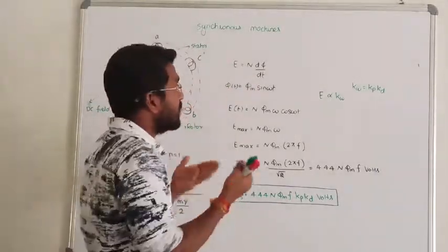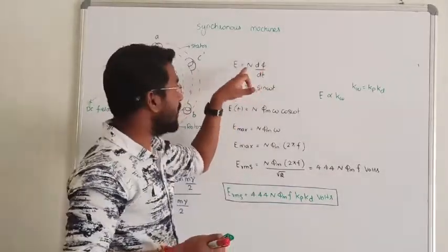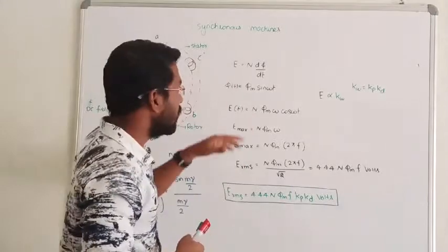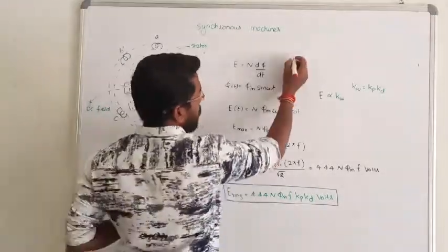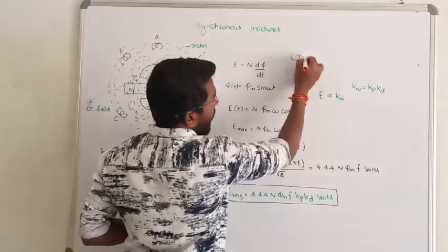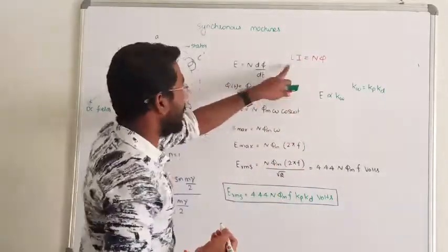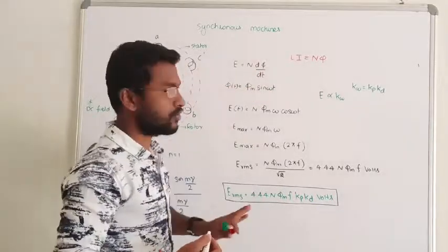The relationship is V equals L times di/dt. In the electrical domain and magnetic domain, we can relate this where L equals N times phi. Phi is the flux, and N phi equals L times i.